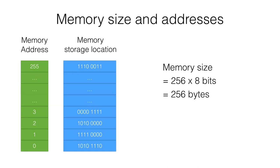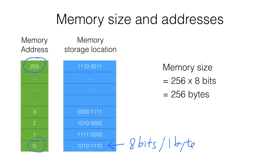Now let's look at a different example. Let's say the storage capacity of each location is still 8 bits, or 1 byte. Now the maximum memory address becomes 255, starting from 0. So how many addresses are there?